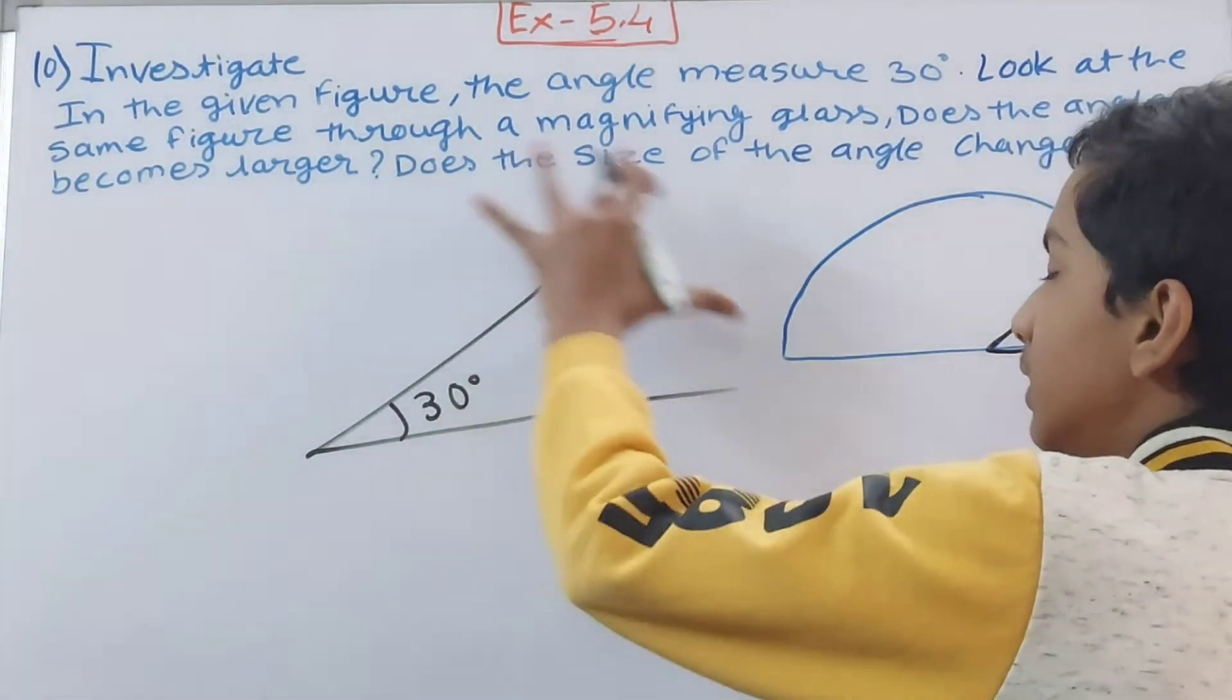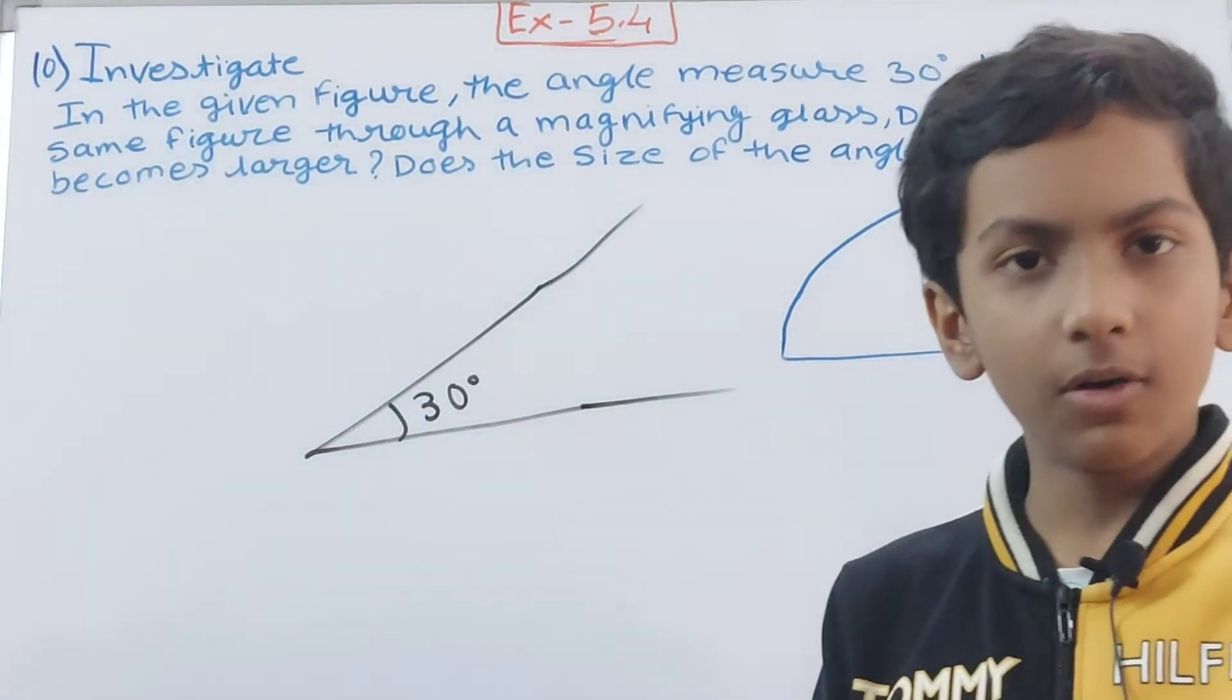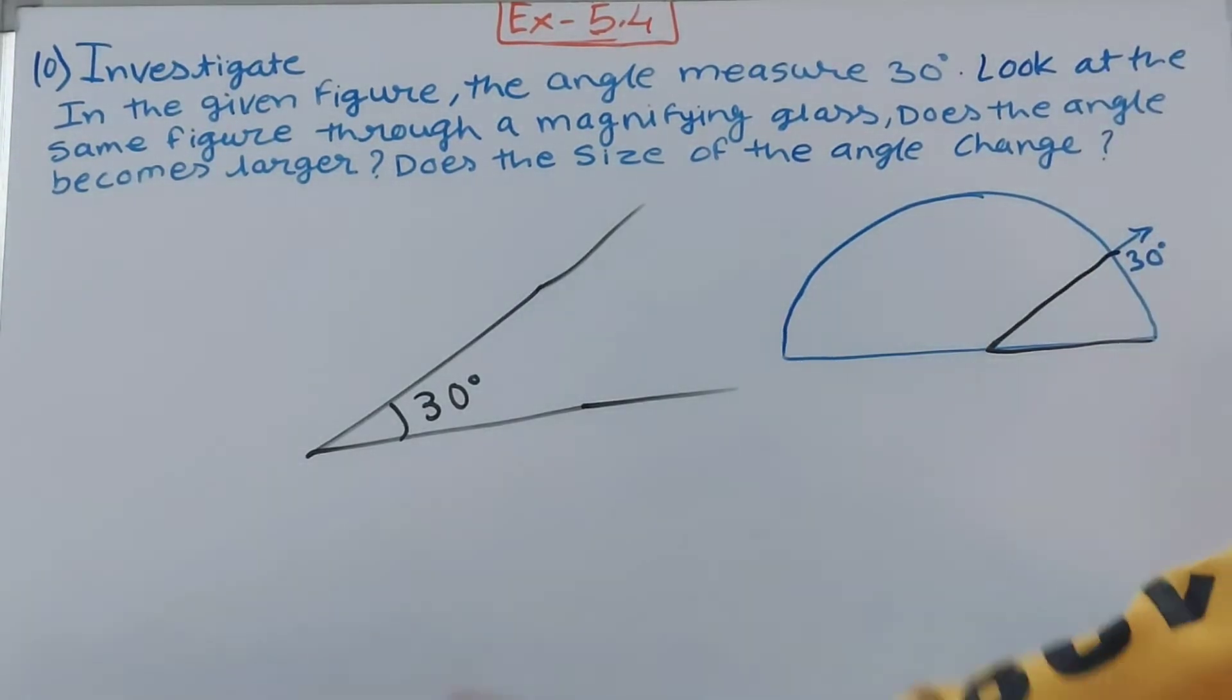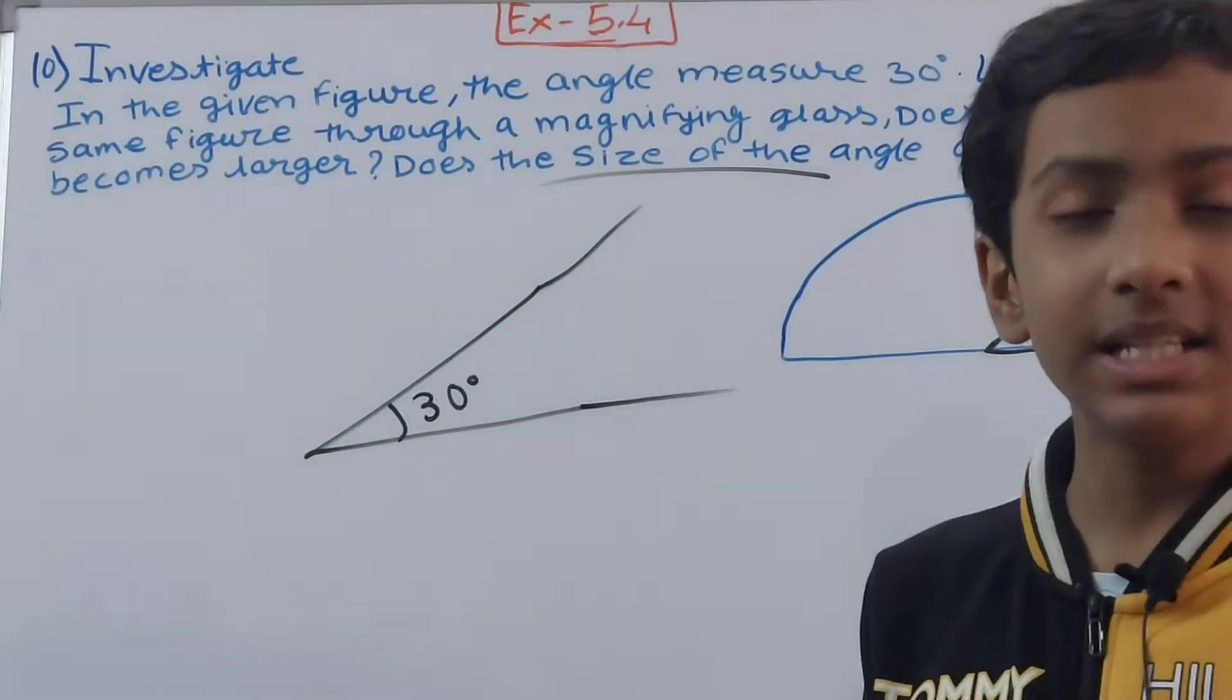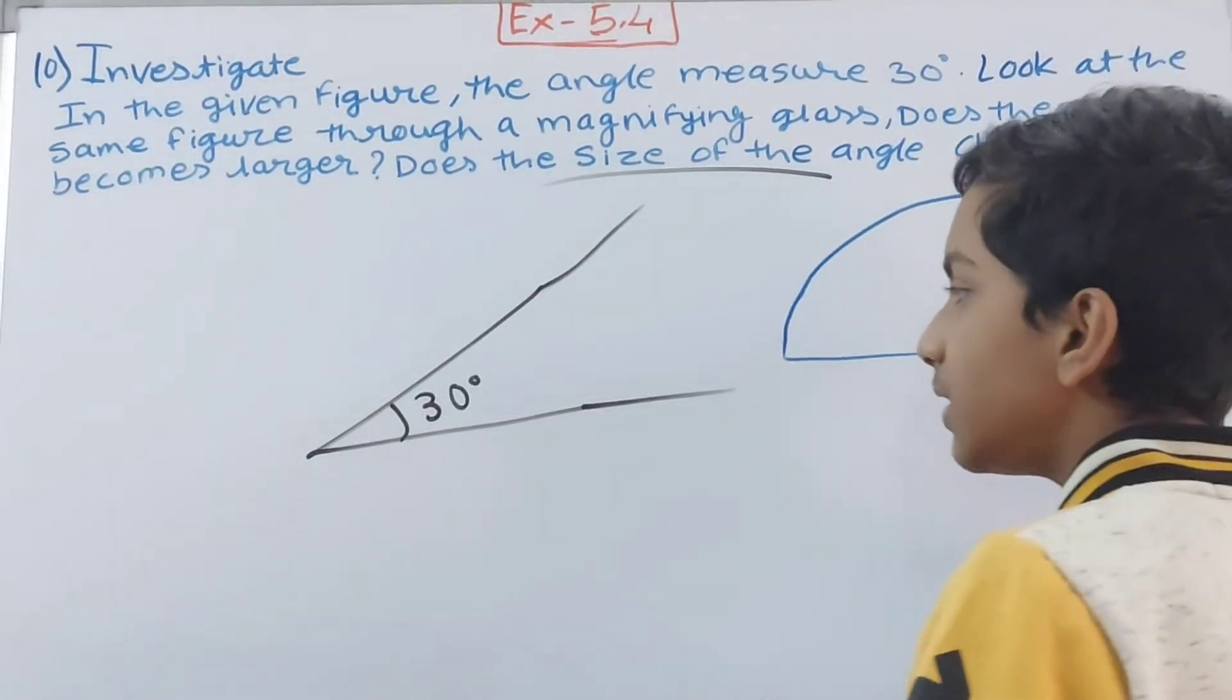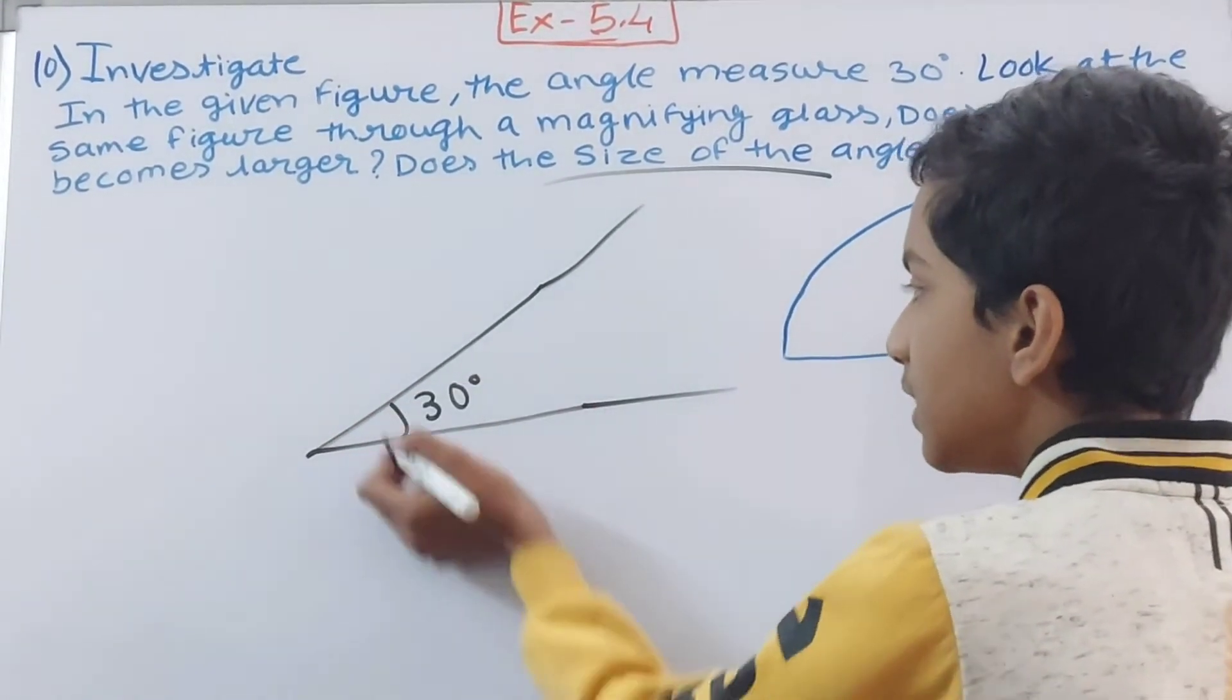The arms will become longer, right, and that means the size of the angle changes. The size of the angle changes. But here one thing you need to keep in mind, if it is 30 degrees, so if you view it using a magnifying glass then also it will be 30 degrees.